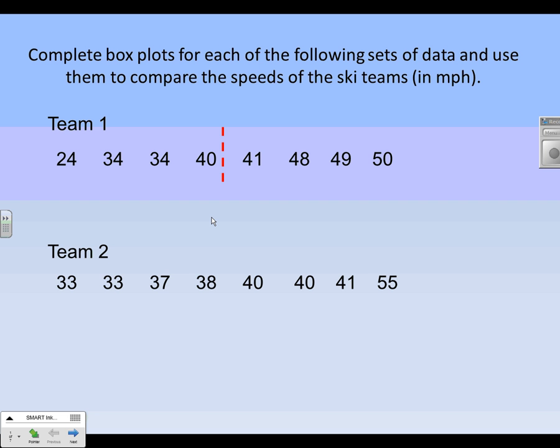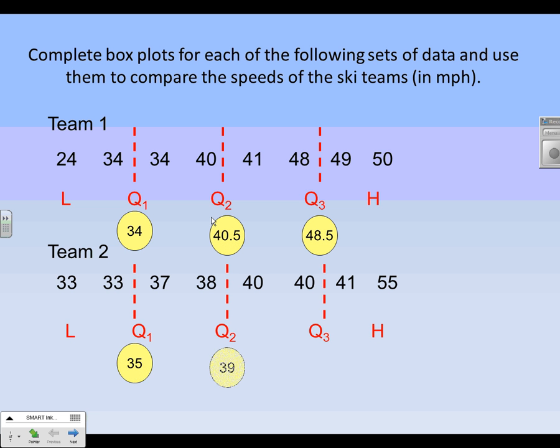With these ones here, team one, we're looking for the 5-figure summary so we can draw our box plots. So the median is going to be in there. Lower quartile and upper quartile in here. Lowest value and highest value obviously where they are. So the quartile 1 34, quartile 2 and quartile 3 as shown. Team 2, same idea. And that's what your data should have given you.